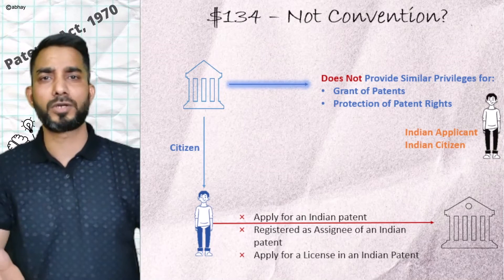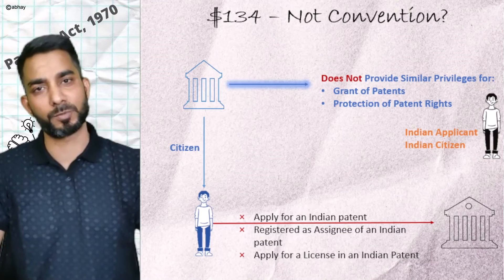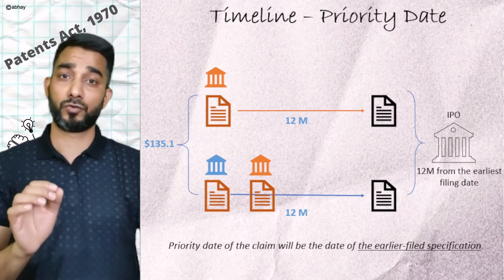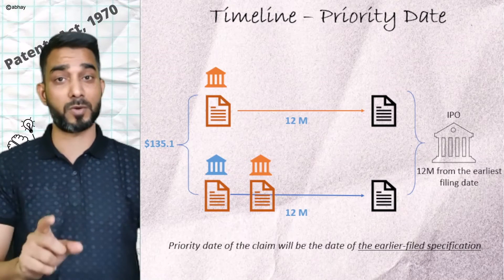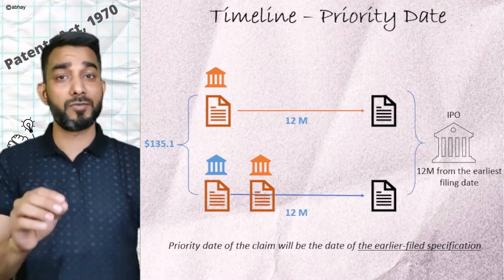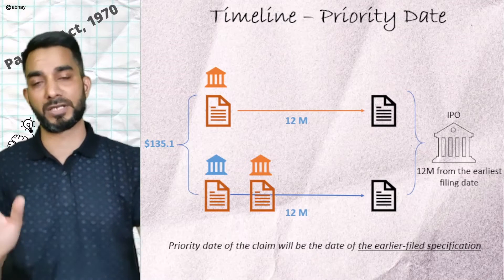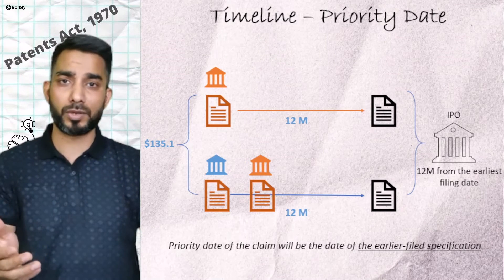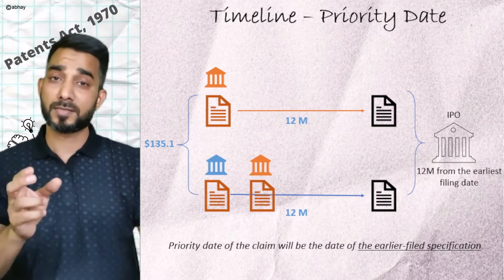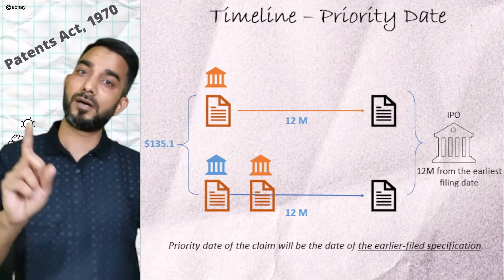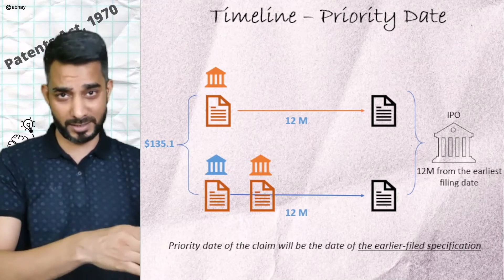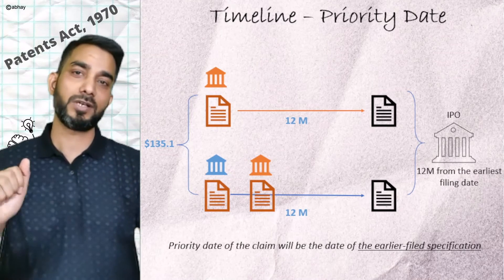Let's learn about the timelines within which a convention application needs to be filed. As per Section 135.1, a convention application needs to be filed within 12 months from the first filing date. This first filing is the filing of the basic application in one of the convention countries. In case two or more applications were filed in two or more convention countries, the 12 months are calculated from the earliest filing date. Similarly, the priority date of such a convention application would be the earliest filing date.